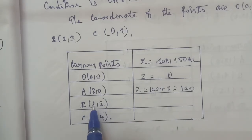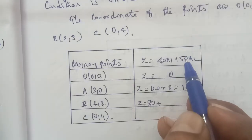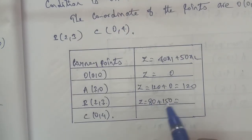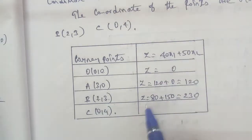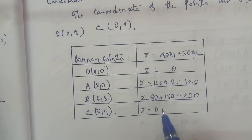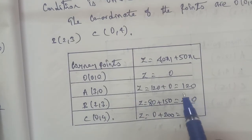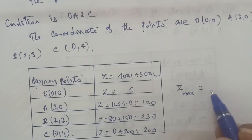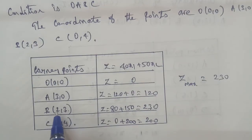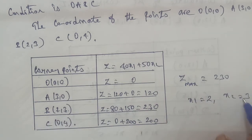Next, at corner point (2,3): x1 equals 2, so 40 into 2 equals 80; x2 equals 3, so 50 into 3 equals 150. Total: 80 plus 150 equals 230. At point (0,4): x1 equals 0, x2 equals 4, so 50 into 4 equals 200. Evaluating all corner points, the maximum Z value is 214.